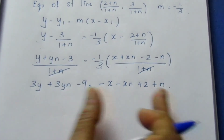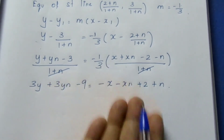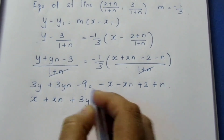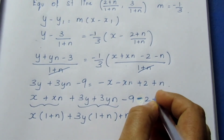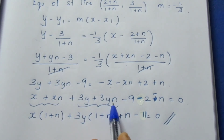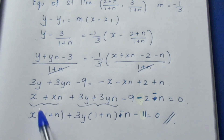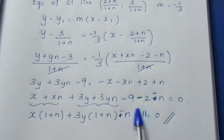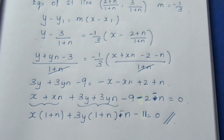Bring everything to one side so that x has a positive sign. Moving all terms to the left gives: x + xN + 3y + 3yN - 9 - 2 - N = 0. Taking x common from the first two terms gives x(1 + N), and taking 3y common gives 3y(1 + N). The constant terms -9 - 2 combine to -11, leaving us with x(1 + N) + 3y(1 + N) - N - 11 = 0. This is the required equation.